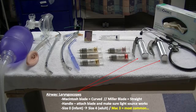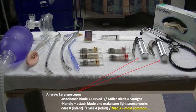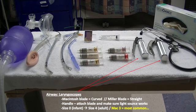The Macintosh blade is used to manipulate the vallecular, which subsequently mobilizes the epiglottis and allows visualization of the vocal cords. The Miller blade is used to directly lift the epiglottis out of the way so that you can access the vocal cords. The Macintosh blade is the most commonly used laryngoscope blade. When preparing, make sure your handle and blade are connected and that your light source is working.